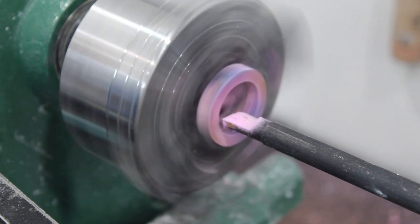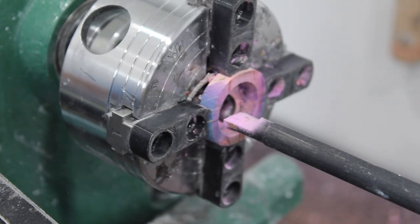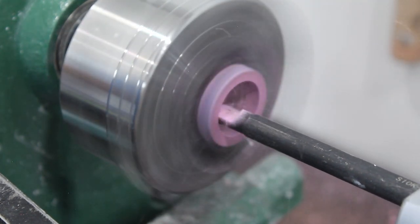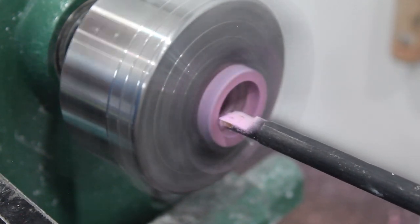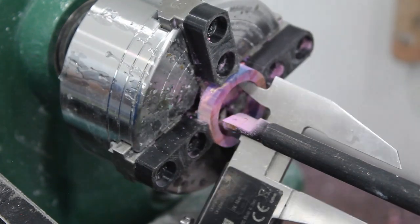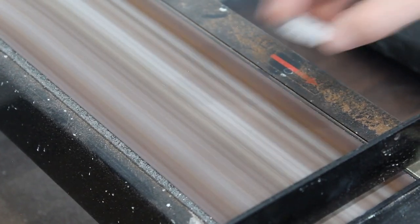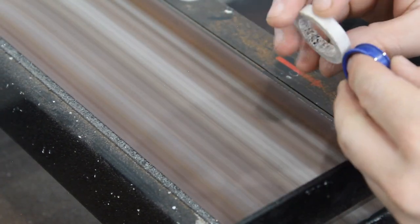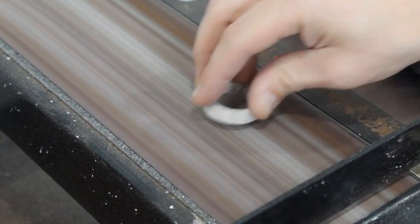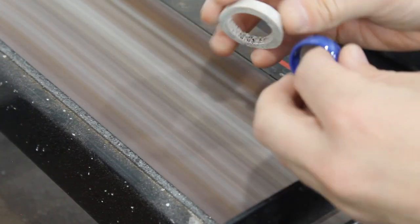The next thing that we will come up to is going to be getting the right width. Now you can do this before you bore it out or after. I think it's a little easier after since there's less material that you have to sand. Also very important here to not go too far, otherwise you're going to have gaps on the edge.